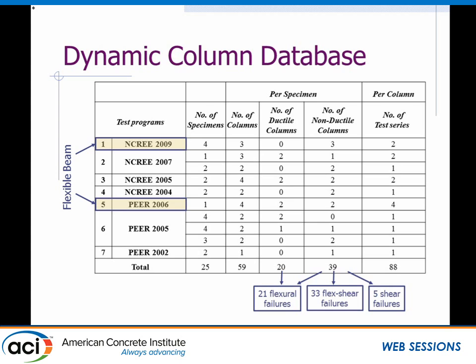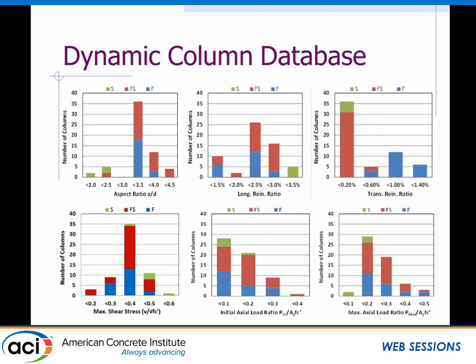Just giving you a sense of the cross-section properties of the columns: there's a broad range of longitudinal reinforcement ratios and transverse reinforcement. There's a concentration on non-ductile columns, given the interest of ASCE 369 on older concrete buildings. I also want to point out that I have two plots for axial load, because in a shaking table test there's variability in axial load due to overturning and component interaction. So there's some initial axial load and a maximum axial load, and that plays a role in the performance we see.